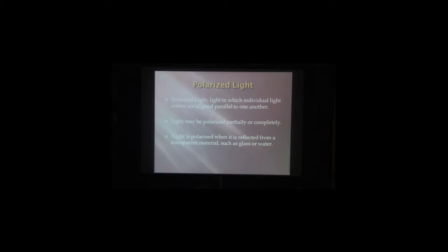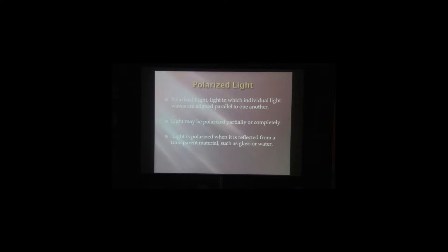The last section we're going to talk about here is polarized light. Polarized light — basically the photons are all aligned. You know how we talked about if you use a snoot, it kind of puts everything in a line. That's kind of the way you need to think about polarized light. All the photons are moving in a parallel line, and what creates that is a reflection off of glass or off of water.